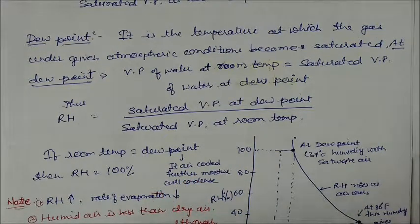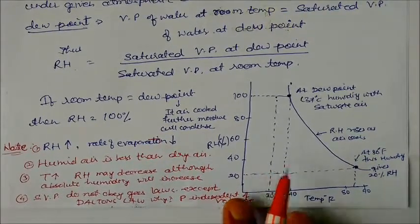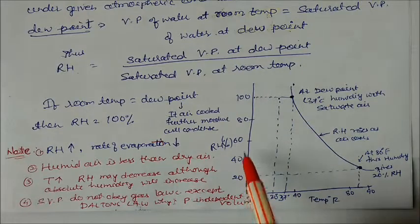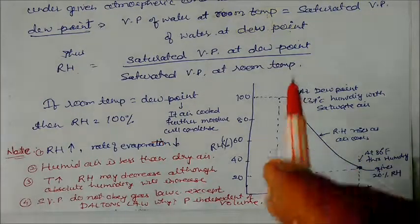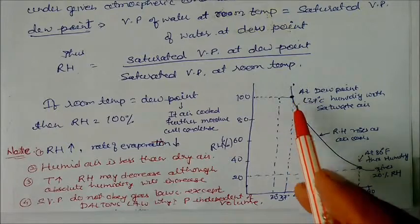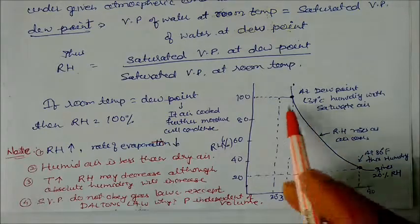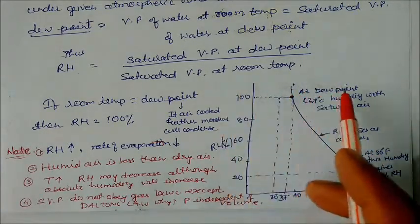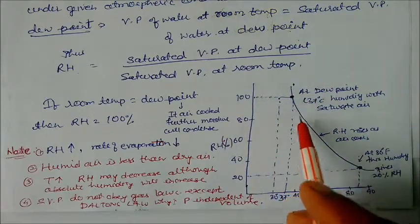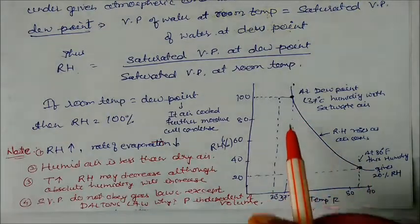I have drawn a graph showing relative humidity increasing as a percentage on one axis and temperature in Fahrenheit on the other. At suppose 37 degrees centigrade, which is the dew point, the air becomes saturated — humidity reaches 100%. At 37°C, vapor pressure of water equals the dew point pressure. If you increase temperature, relative humidity will decrease.